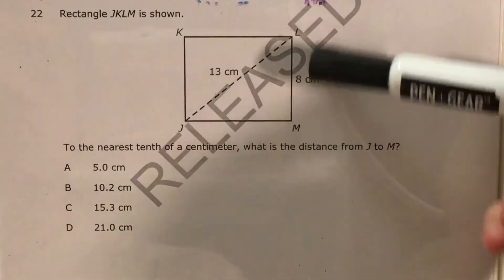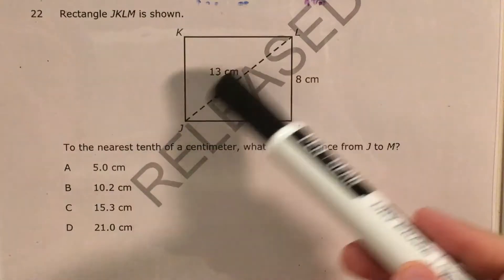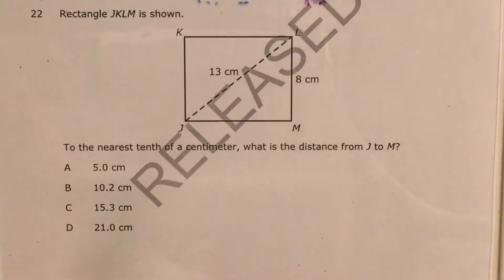Now the problem gives us this leg, or this side, L, M, and it gives us this diagonal, JL, which is 13 centimeters.